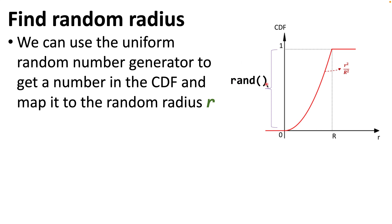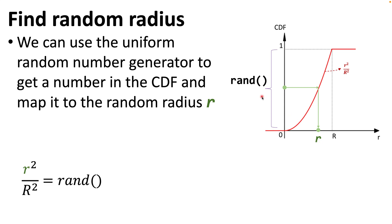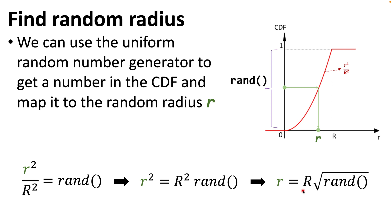We have a uniform random number generator that produces a number between 0 and 1. We can obtain a value between 0 and 1 from rand() and map it through the inverse CDF to find the actual radius. Mathematically, to find r using rand(), we derive that r² = R² · rand(), and therefore r = R · sqrt(rand()).